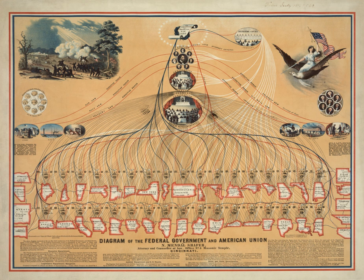In some states, supreme and lower court justices are elected by the people; in others, they are appointed, as they are in the federal system.